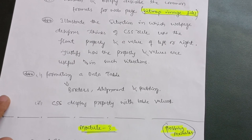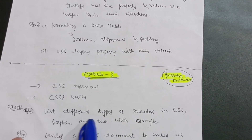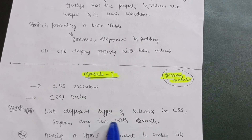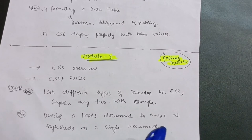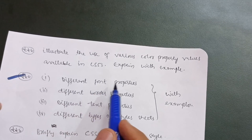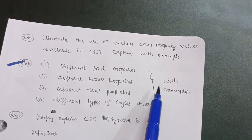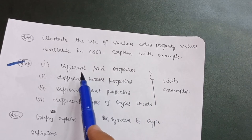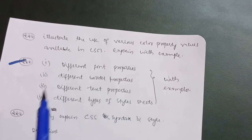In Module 3, you should first know CSS overview and CSS rules, which are the most important basic topics. A super important question: list different types of selectors in CSS and explain any two with examples. Next, develop an HTML5 document to embed all style sheets in a single document. Illustrate the use of various color property values available in CSS3 with examples. Also cover different font properties, different border properties, different text properties, and different types of style sheets — the examination will ask you to explain these with examples.